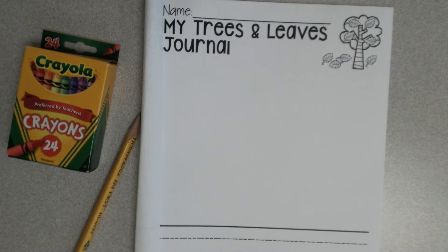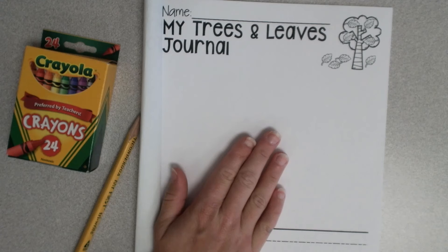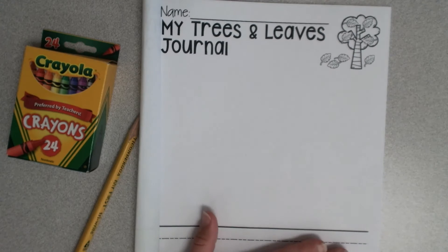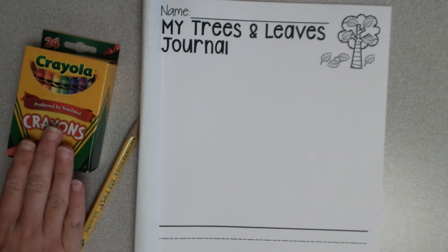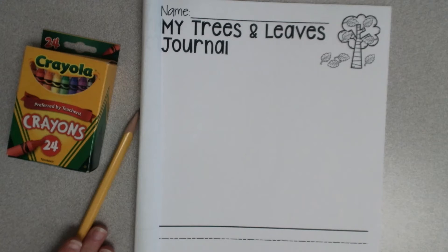Alrighty, I have all three of the supplies that I need in order to do this activity. I have my journal and it's open up to my next empty page. I have my crayons and my pencil and it's time for us to start to think.